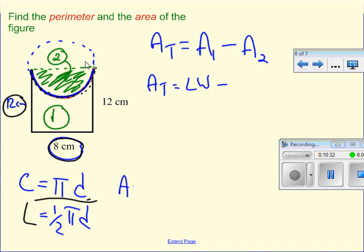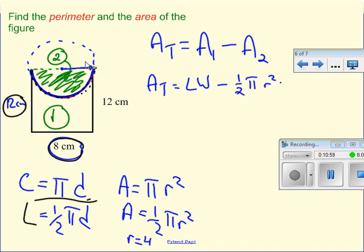Well, the area of a circle is equal to pi r squared. So the area of half a circle will be half pi r squared. And r, if you remember, is the distance between the center and any outside point. So r is equal to 4. So here I have one-half pi r squared. Here, length times width, 12 times 8, minus one-half times 3.14 times 4 squared.